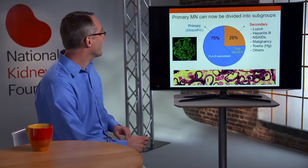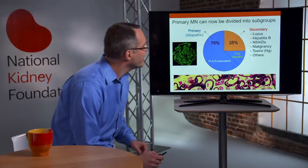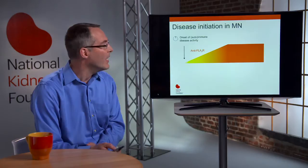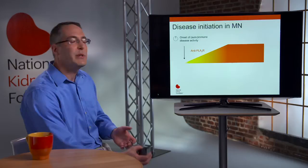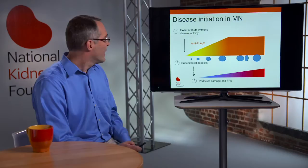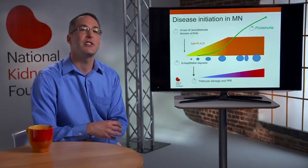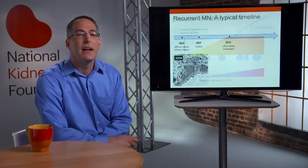We can now subdivide primary membranous nephropathy into 70–80% that have the PLA2R-associated version and another 20–30% that have what we call truly idiopathic membranous nephropathy. How does the disease start? Something triggers the onset of disease activity and causes the emergence of antibodies such as anti-PLA2R — this may be a genetic or environmental insult. As anti-PLA2R levels increase and reach some threshold, local complement regulatory systems are overwhelmed, deposits start to form and grow, podocyte damage accumulates, proteinuria rises, and the patient becomes nephrotic with weight gain and swelling.